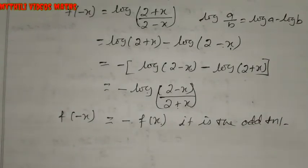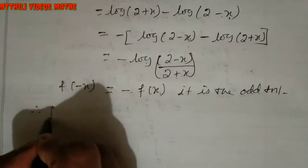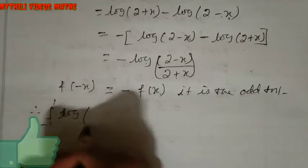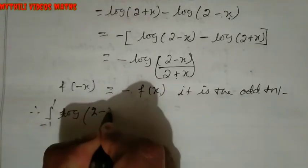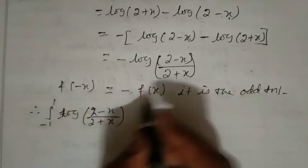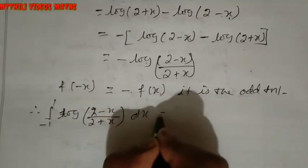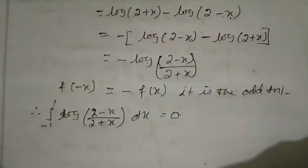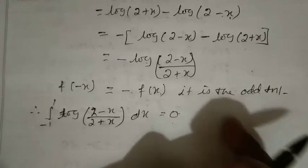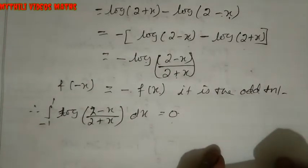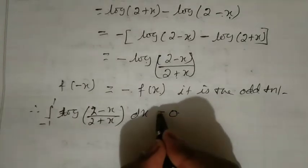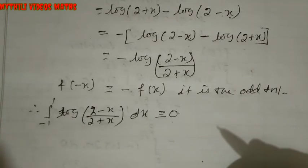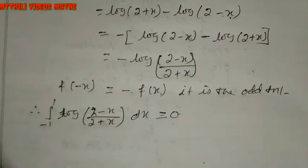Therefore f(x) is an odd function, since f(minus x) equals minus f(x). So by the odd function property, the integration from minus 1 to 1 of log((2 minus x)/(2 plus x)) dx equals 0. For odd functions the answer is simply 0. Thank you very much.